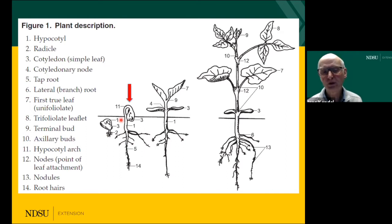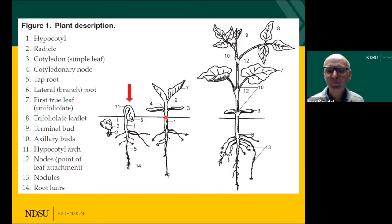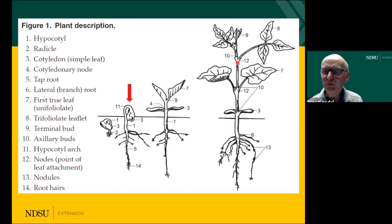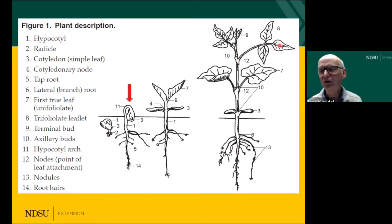If we break off the plant at that particular point, we basically have a dead plant. Looking at plant development, we can see that the first leaves that come out are the cotyledons — those are the seed parts. Then the first true leaves we see are the unifoliates, and then we start to go to the first trifoliate. We call it trifoliate because it consists of three parts, but it is actually one leaf. That is when we start transitioning into calling the growth stage V1.